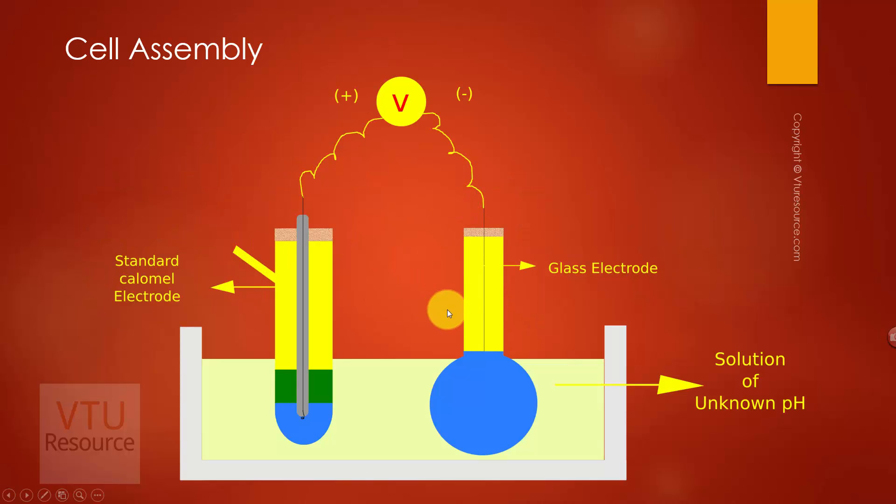The glass electrode is coupled with a saturated calomel electrode which acts as a reference electrode. Both electrodes are dipped in the solution whose pH is to be determined and connected to a voltmeter. The potential measured is known as the cell potential.